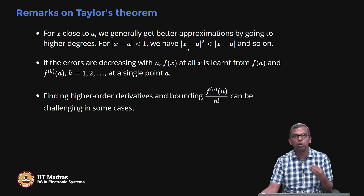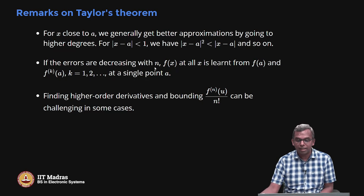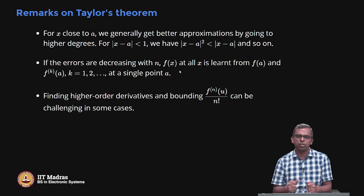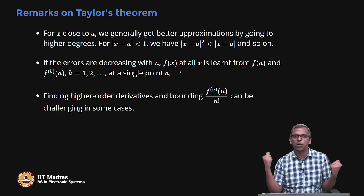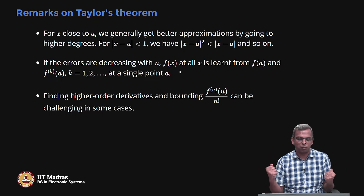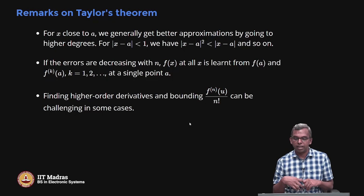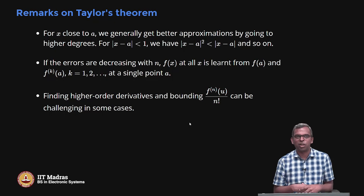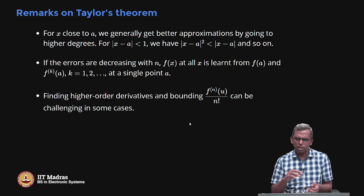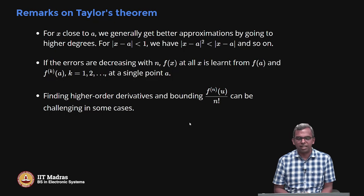Higher degree polynomials give better approximations. The key point is that F of x at all x is learned from F of A and its derivatives at the single point A, giving wonderful far-reaching control on where F of x can be. In problems, if you do not know the function too well, then its nth derivative divided by n factorial can be challenging, but usually it can be nailed down reasonably. This concludes the lecture. Thank you very much.